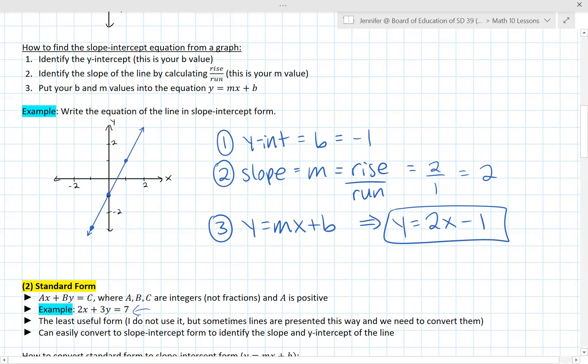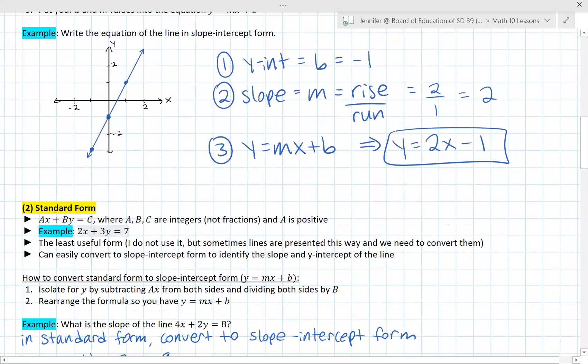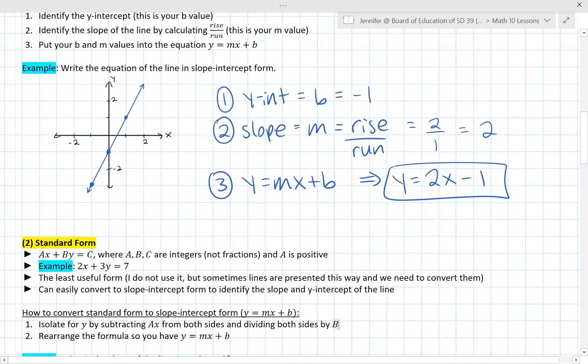So if we're given something in standard form, I can rearrange it to convert it to slope-intercept form. So one line can be represented both in slope-intercept form and in standard form. The reason that we often want to convert the line, if it's given in standard form, we want to convert it to slope-intercept, is because looking at this form here, we don't have any direct information given to us. a, b, and c are just integers. It doesn't represent slope. It doesn't represent the intercept. It doesn't really represent anything until we convert it to slope-intercept form. So that's why it's not as useful.